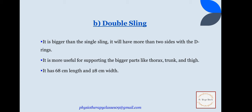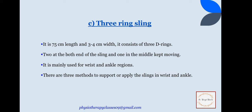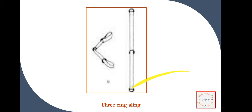The double sling is bigger than the single one, with more than two sides with D-rings, and is more useful for supporting bigger parts of the body. Its dimension is 68 cm × 28 cm. The three-ring sling has a dimension of 75 cm length and 3–4 cm wide, with three D-rings — one at each end and one in the middle part. It is mainly used for the wrist and ankle region, and there are three methods to apply the sling at the wrist and ankle.